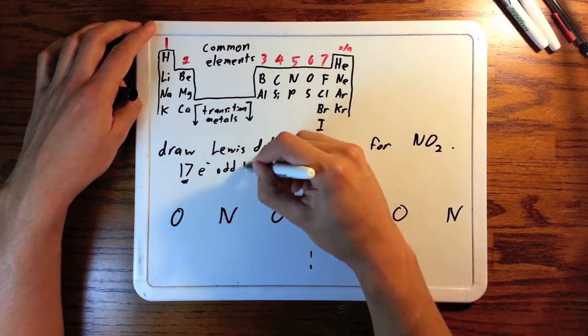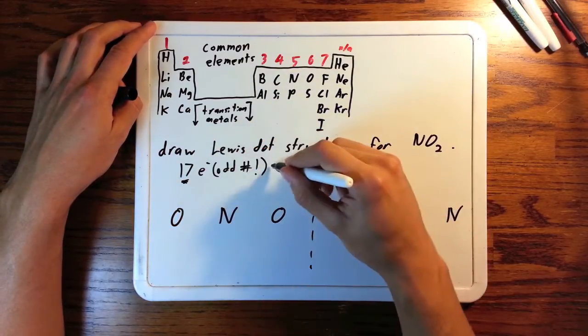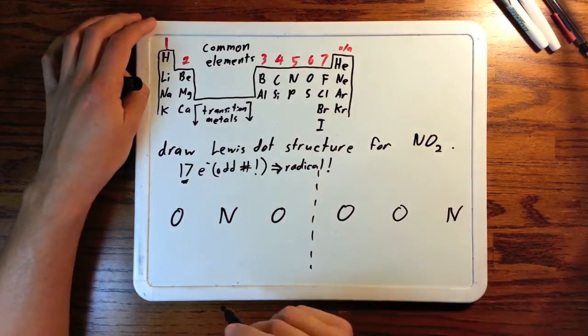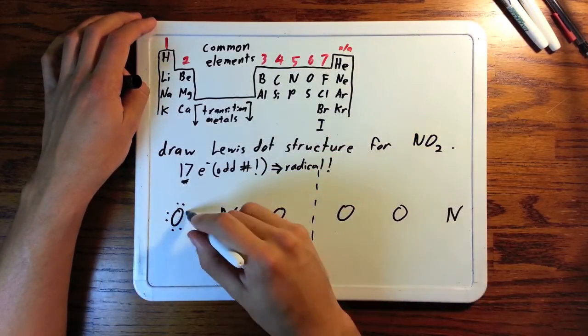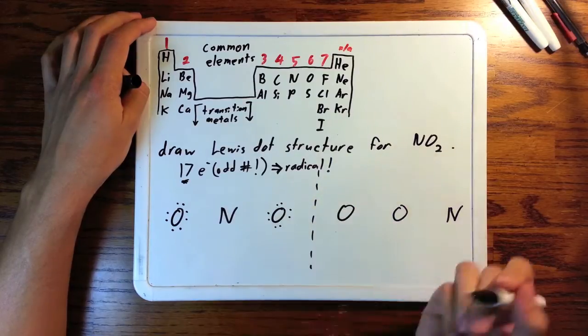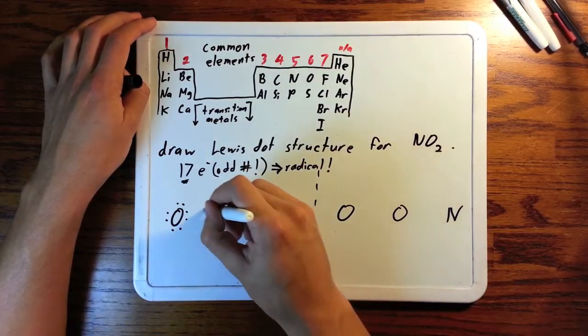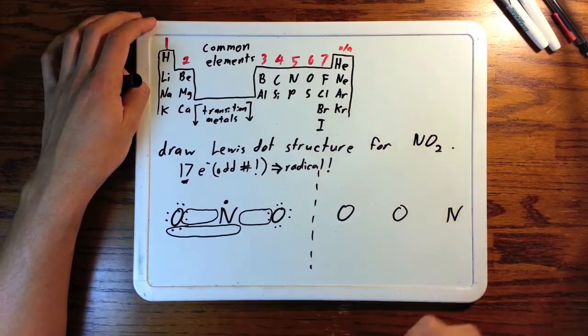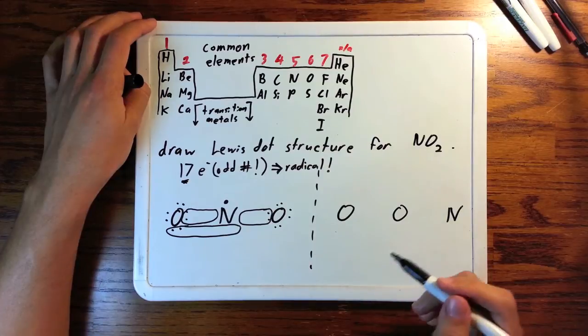Now we have 6 plus 6 electrons plus 5, so 17 electrons. This odd number implies there will be a radical. As usual, we fill up the outside atoms first with their octets, and we have one electron left over that goes on the inside atom. Now draw bonds to give the inner atom more electrons. Keep in mind we'll have 7, not 8 electrons in the center, because there is a radical.